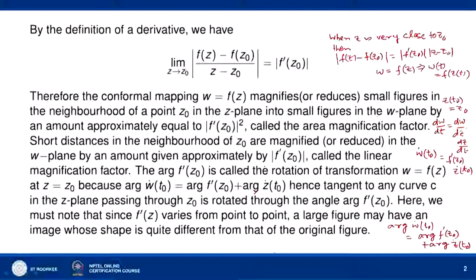We have to notice that since f'(z) varies from point to point, this is actually valid because the limit of |f(z) - f(z0)| / |z - z0| equals |f'(z0)|. So this is valid for values of z which are very close to z0, that is in a sufficiently small neighbourhood of z0. The lengths are magnified or reduced by |f'(z0)|, and areas by |f'(z0)|², but in the case of a large figure, we may have an image whose shape is quite different from that of the original figure.